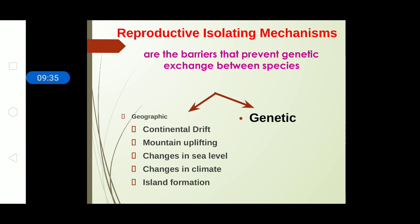Island formation is another geographic isolation factor — the best example is Australia, which has a variety of animals not found elsewhere. Finally, genetic isolation is a unique aspect where the hybrid is infertile, or even after successful offspring formation in one generation it cannot be passed on to the next generations.